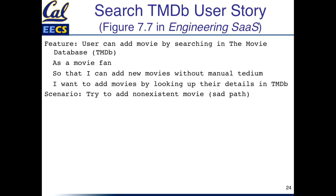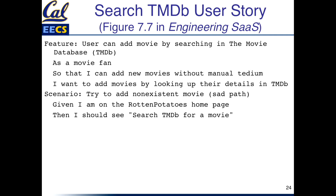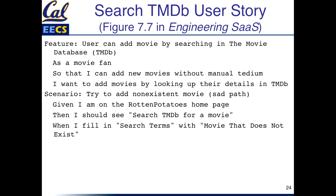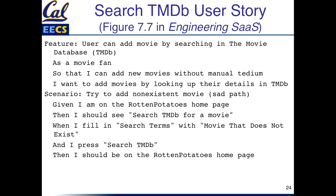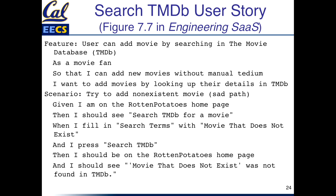We're going to write down the sad path first — let's try to add a movie that doesn't work. Given that I'm on the Rotten Potatoes home page, then I should see 'Search for a TMDB movie.' When I fill in search terms with a made-up movie name that does not exist — hopefully there's no movie with that name — and I press 'Search TMDB,' then I should be on the Rotten Potatoes home page and I should see 'Movie that does not exist was not found in the TMDB.' That's the sad path.